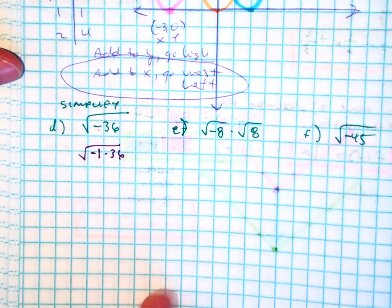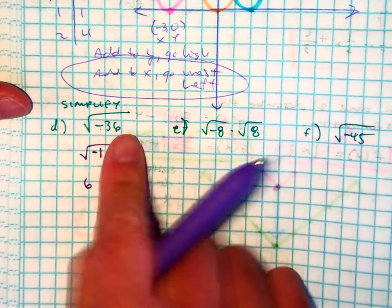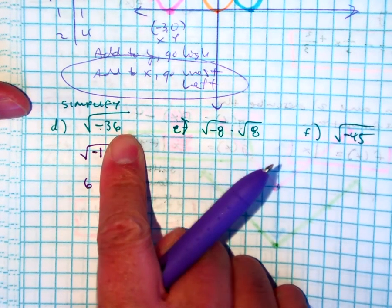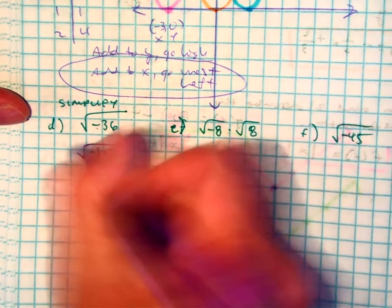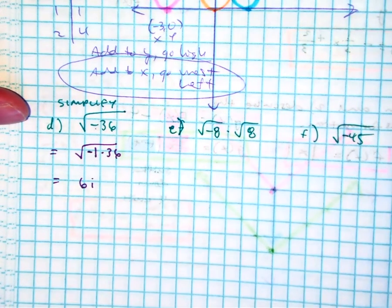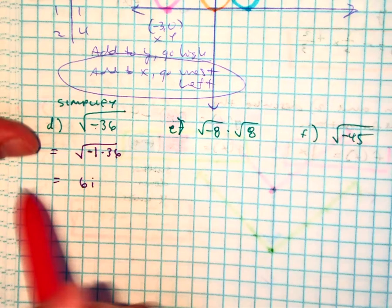And class, what's the square root of 36? And what's the square root of negative 1? Our answer is 6i. Raise your hand if you got that. Awesome.